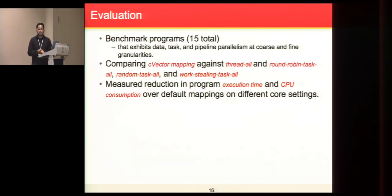To evaluate our approach, we have considered 15 different benchmark programs from a variety of languages and sources such as Scala. These programs exhibit different kinds of parallelism. We compare our C vector based mapping against four widely known default mapping strategies: thread, task (with round robin and random), and work stealing. We measure execution time and CPU consumption to compare our approach.